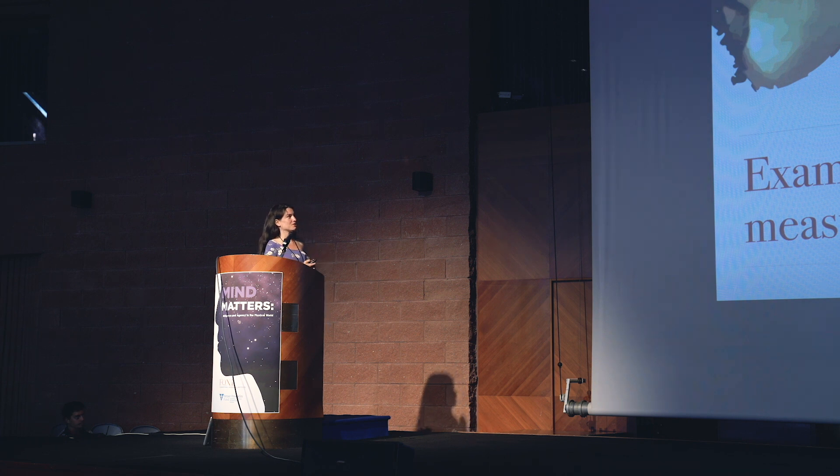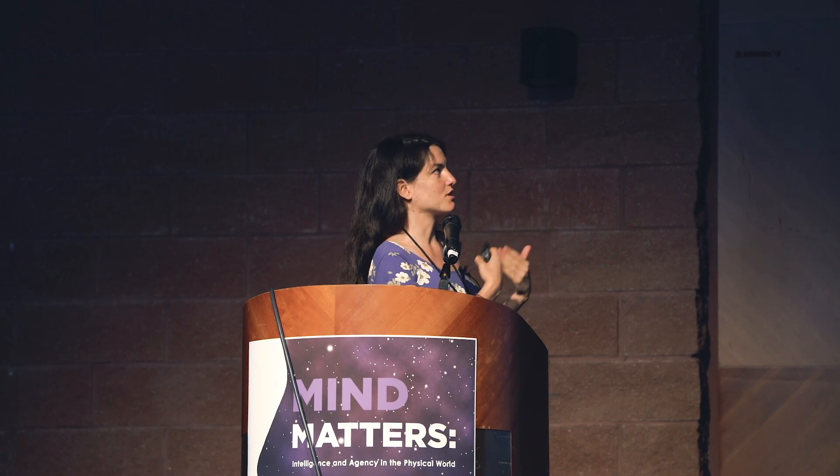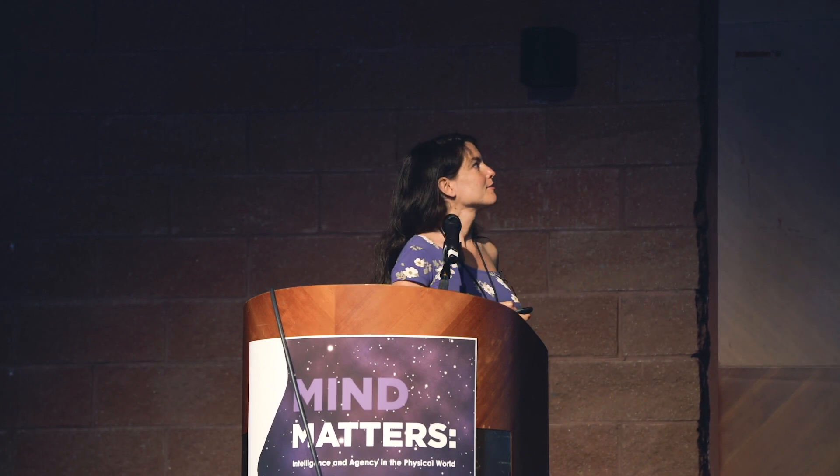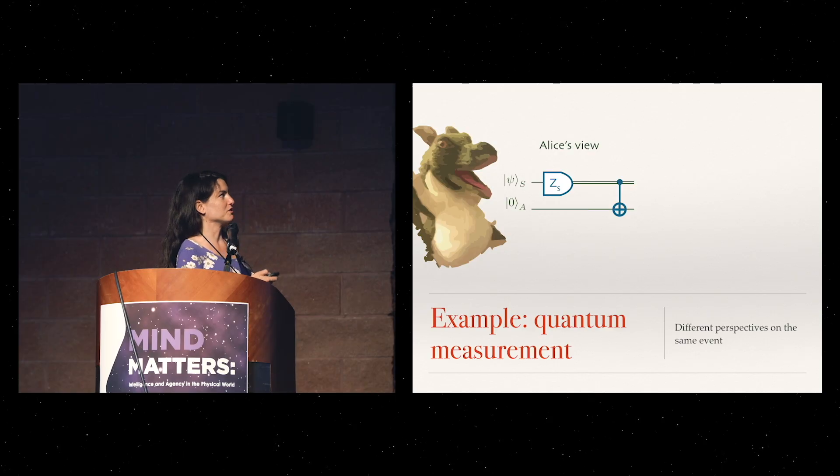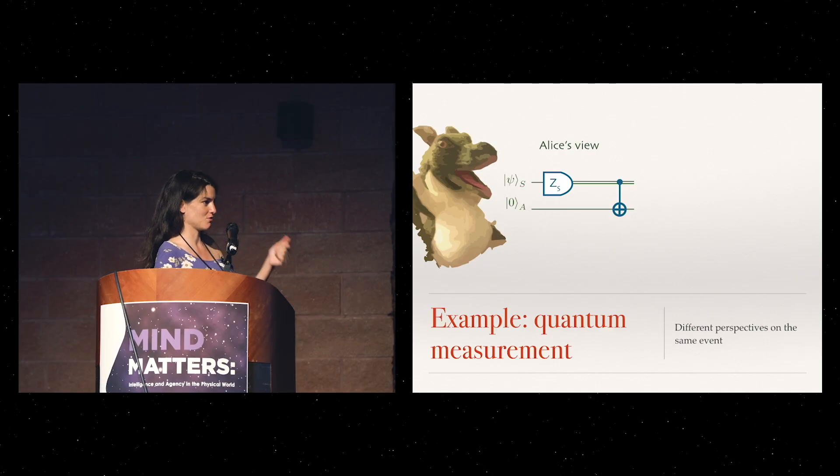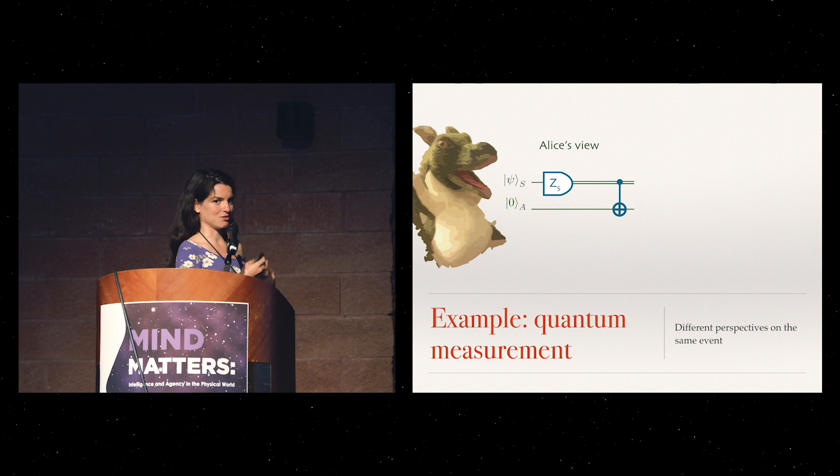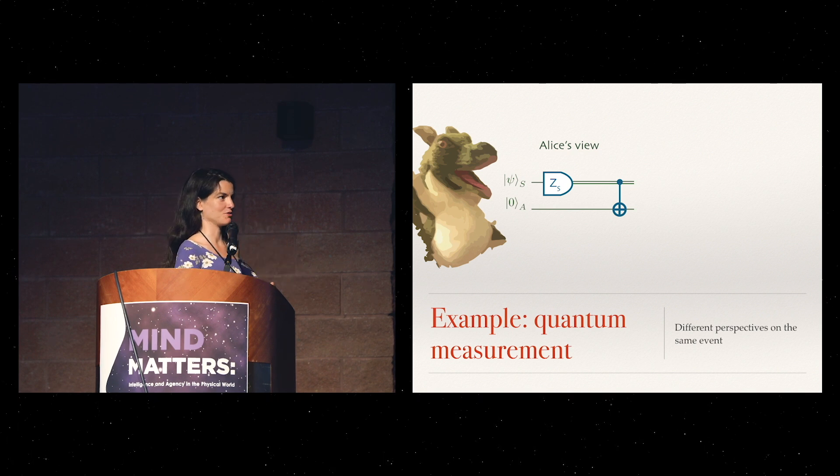This is because, for example, she could think that her measurement apparatus is very large, that she's interacting with a large environment. She doesn't want to keep track of this all the time, just for complexity reasons, for memory reasons. This is what we do when we go in the lab and we measure the system. We just say, okay, we measured a zero, I'll act from now on as if it was a zero. I don't need to keep track that I'm in a superposition of seeing the two things.